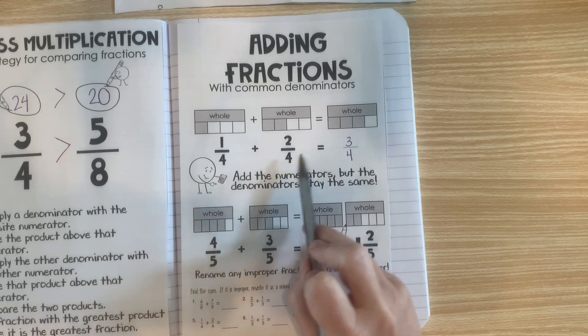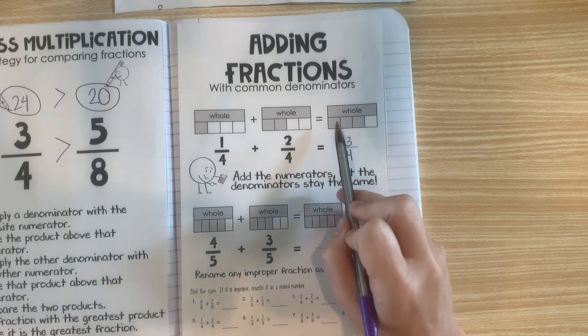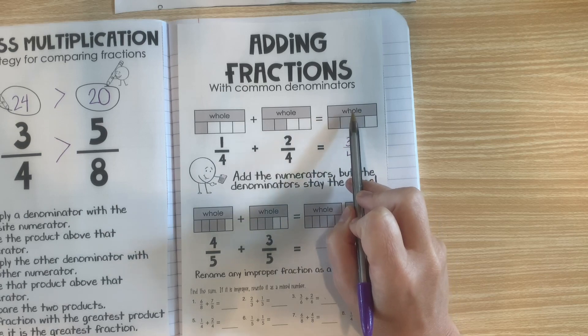The denominator always stays the same because the denominator represents how many parts are in 1 of the wholes.